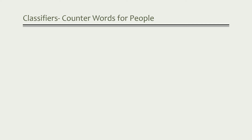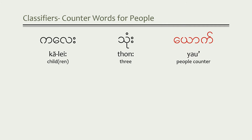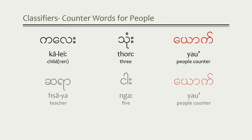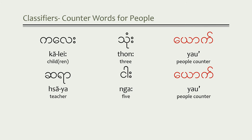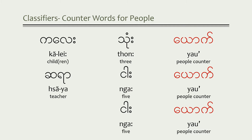If you want to identify the number of people in a specific group — maybe the number of children or teachers — you're going to use this counter word. To say three children: 'Kalei tong yao'. To say five teachers: 'Siya ngā yao'. Now if it's just people in general, you could use the noun for people, but you wouldn't have to. If there were five people, you could just say 'ngā yao', because this counter word is only used for people, so it's implied. In fact, the root word is seldom used when replying to a question — if asked how many children I have, I would merely answer 'ngā yao'.